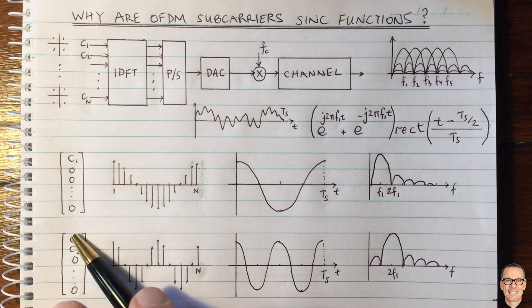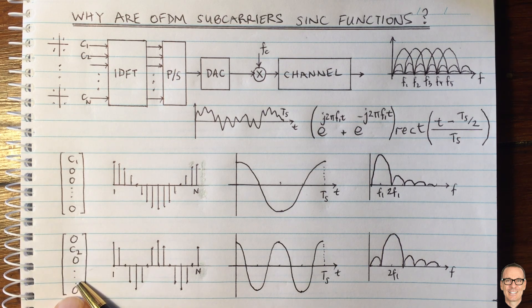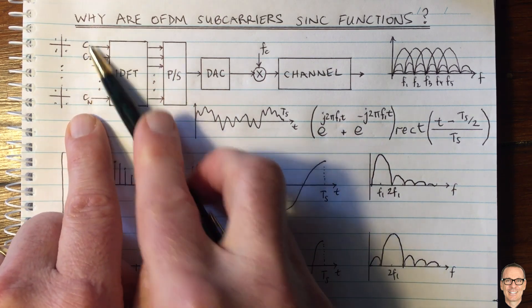the same thing goes for the higher frequencies as well, the higher subcarriers. They're just coming about from these different constellation points, higher in the subsequent elements of the input vector.